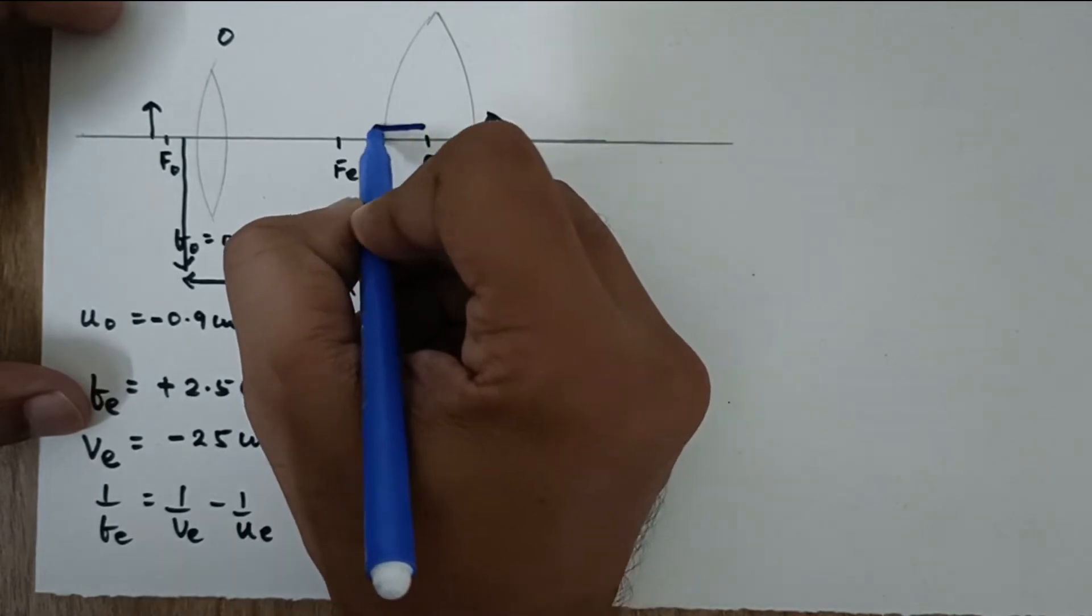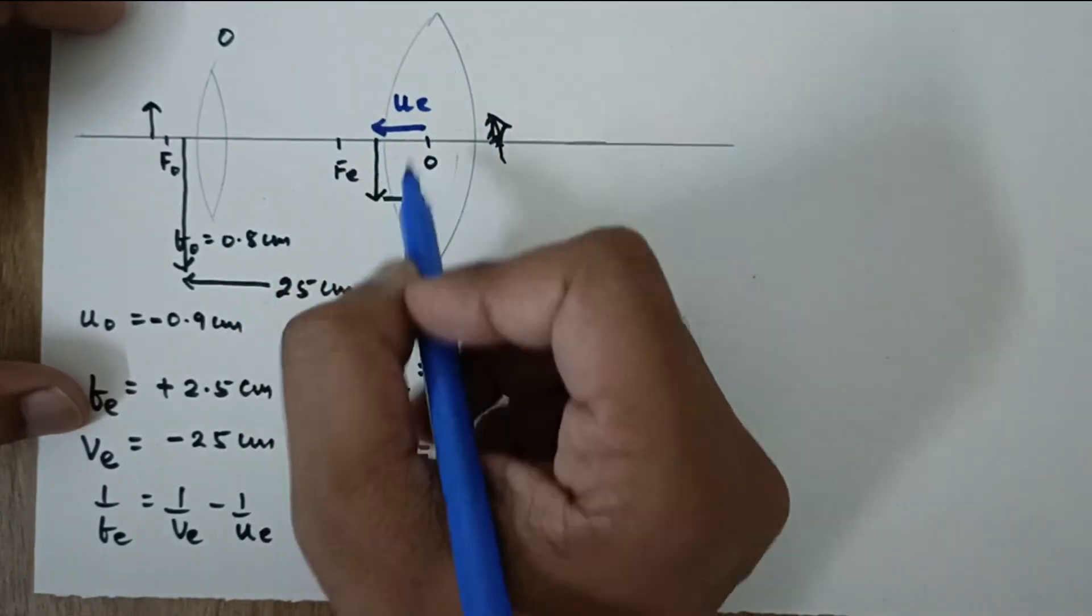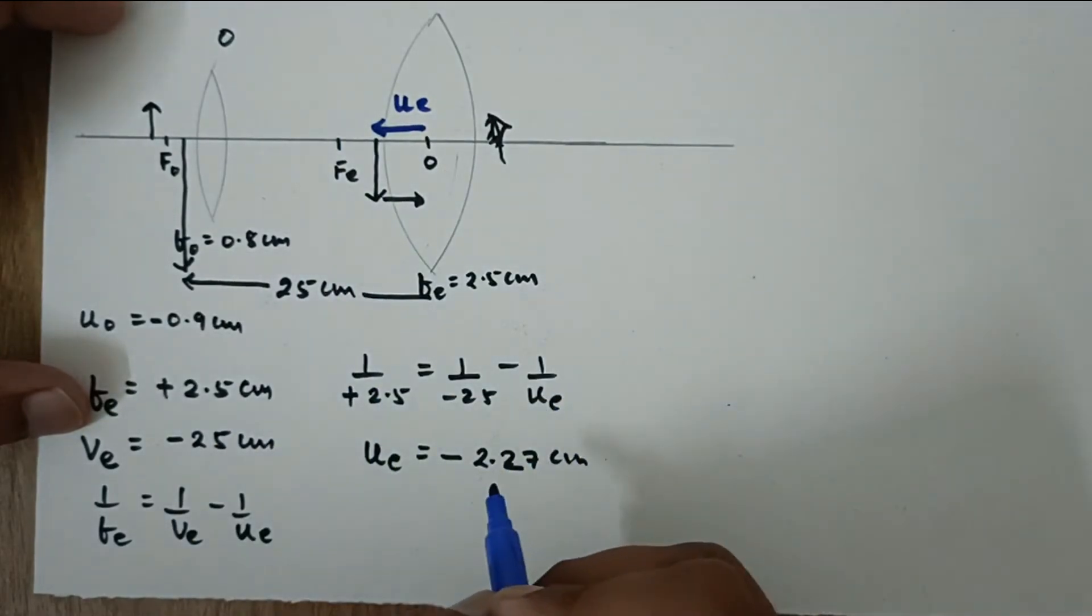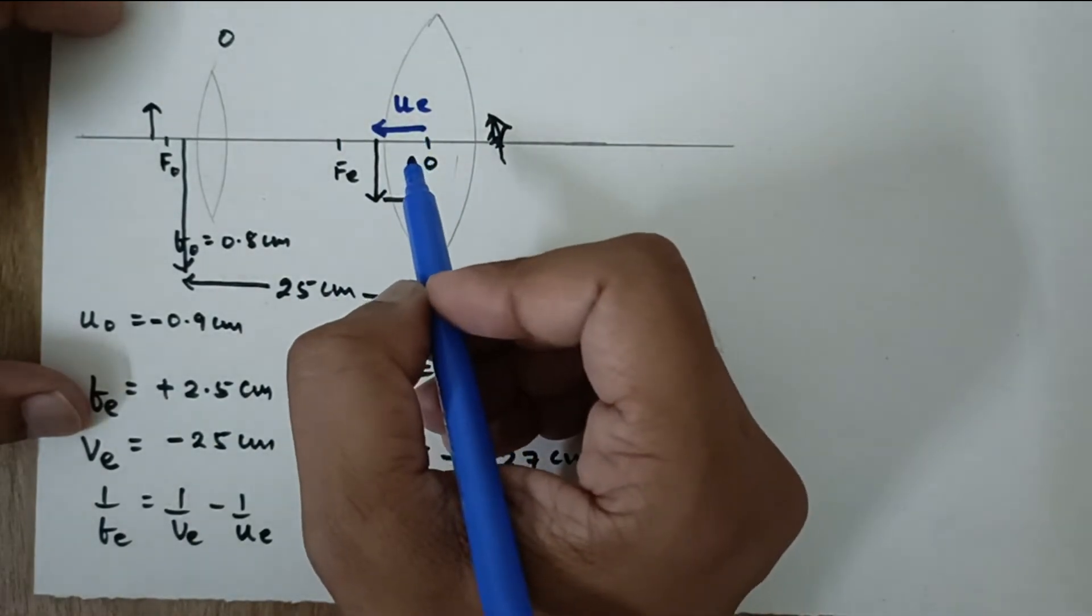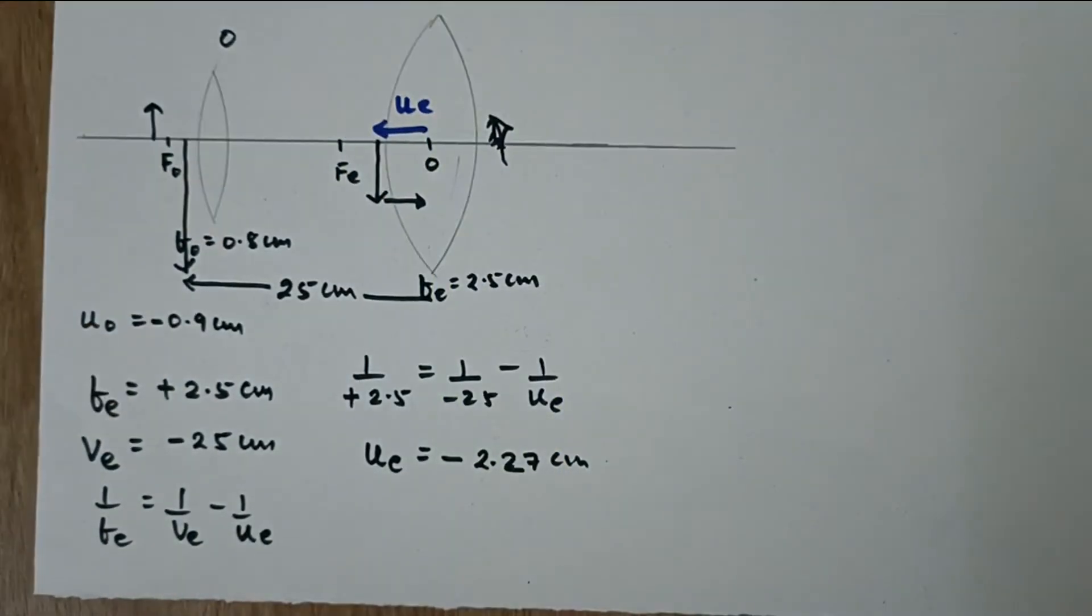So that means UE means the object distance for the eyepiece. So this is basically the UE because now this image behaves as the object for this lens. So we have found that. Now they are asking the question about the separation between both the lenses.